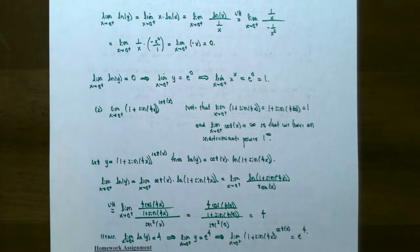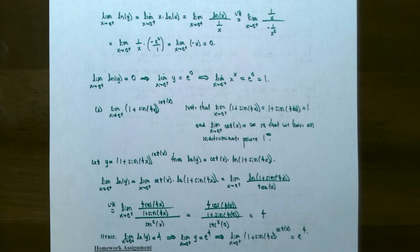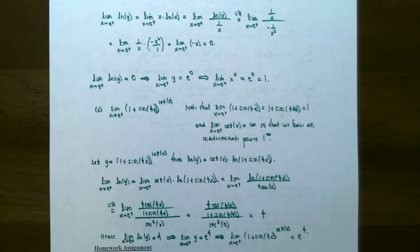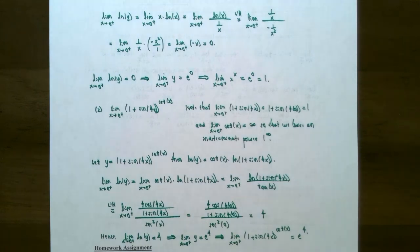This gives you an idea of how to find limits involving indeterminate products, indeterminate differences, and indeterminate powers. You want to rewrite each of them to be of an indeterminate form of type 0 divided by 0 or infinity divided by infinity. If you have any questions about indeterminate powers, products, or differences, or when working on homework problems, please let me know. I'll see you in the next video when we talk about optimization problems.